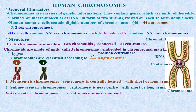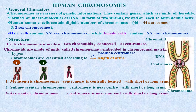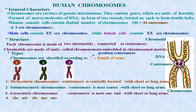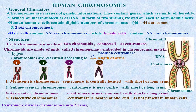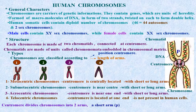Acrocentric chromosomes: the centromere is found near one end; it may also have short or long arms. Telocentric chromosomes: the centromere is located at one end; these are not present in human cells. The centromere divides the chromosome into two arms: a short arm (p) and a long arm (q).